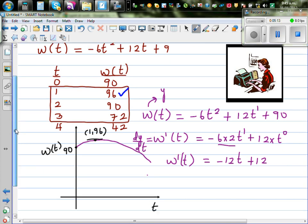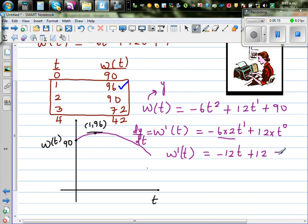And I'm going to set this equal to zero. Because you know at the maximum you have a gradient of zero. So this is -12t + 12 = 0. Solving this equation is equal to -12.